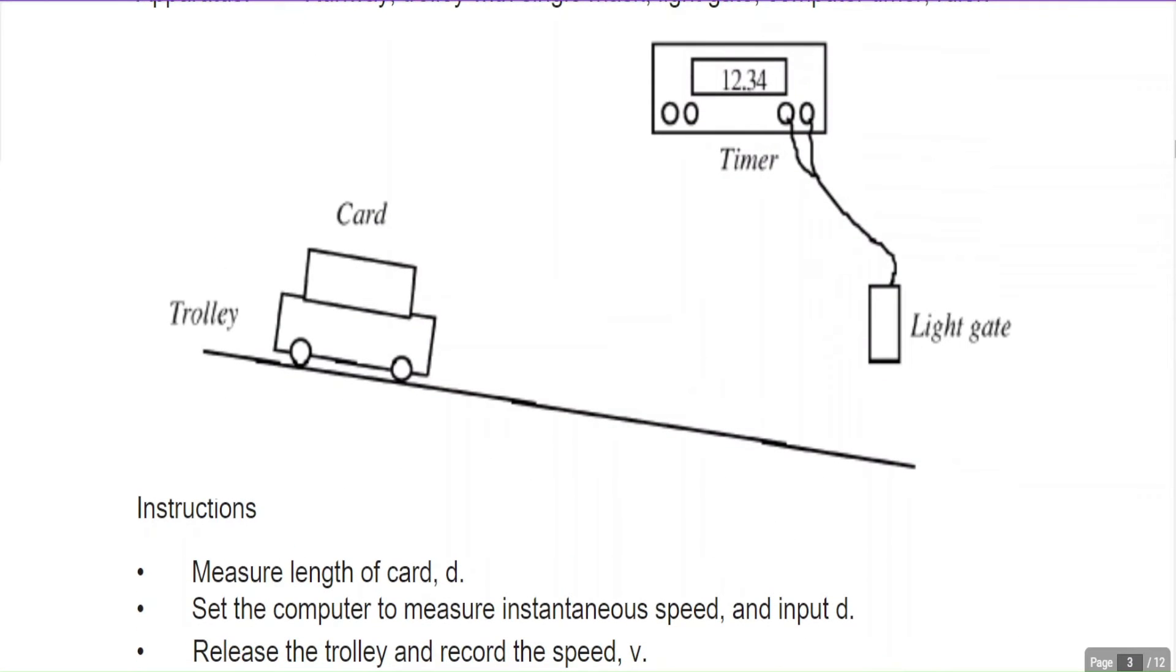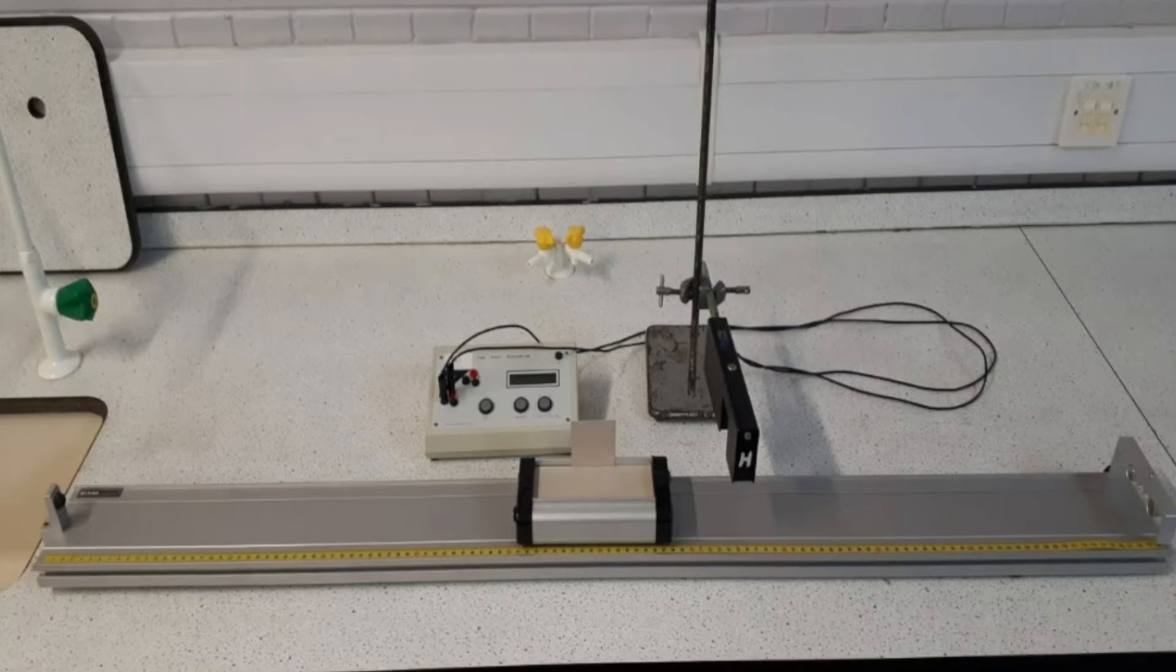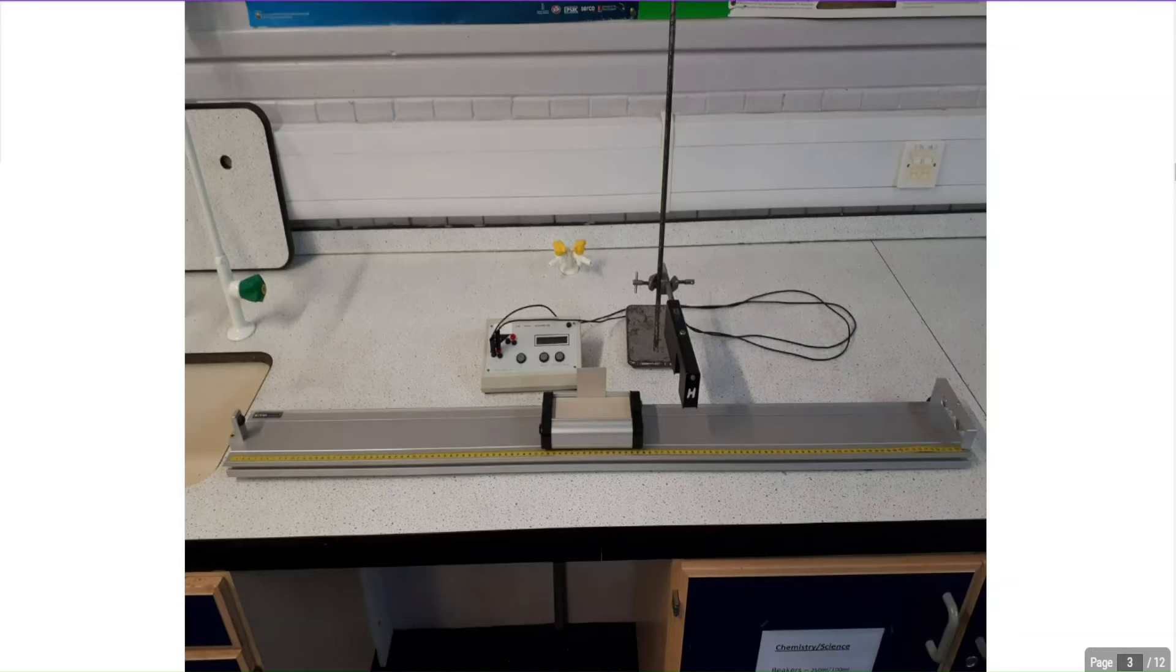When finding the instantaneous speed, you just have one light gate with an interrupt card. The time taken for the light gate to interact with this whole distance is given by the distance d on the interrupt card. This end passes through the light gate first, and this end passes time t later. You find the instantaneous speed by saying v equals distance over time. This is the setup where you have one light gate and the timer.